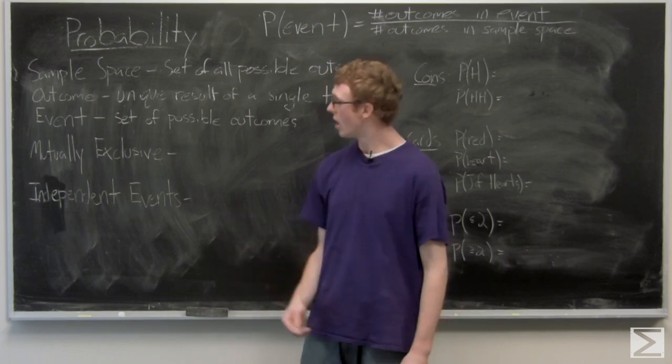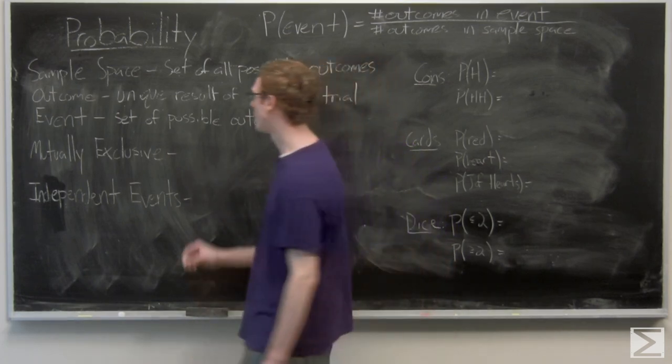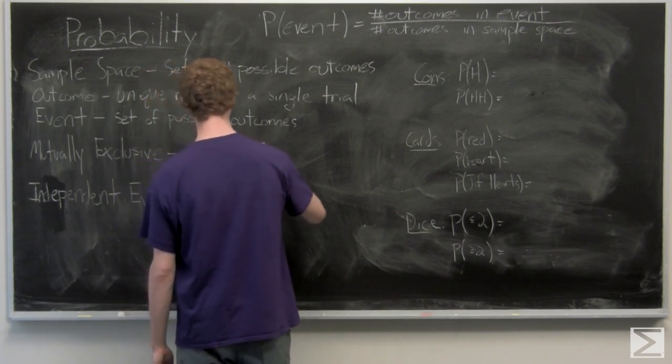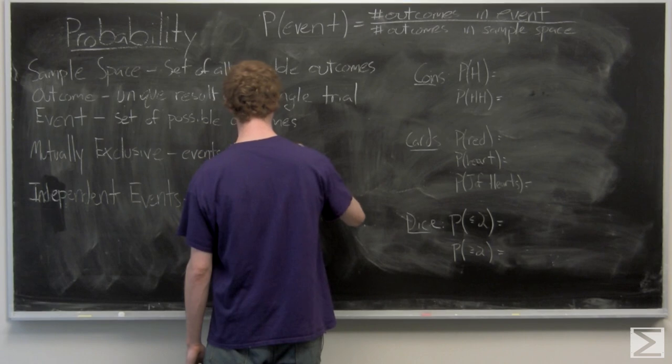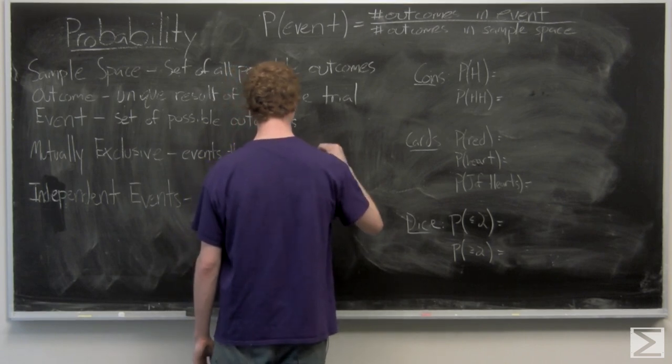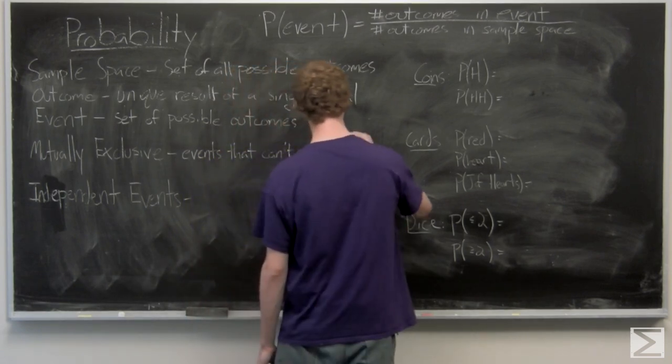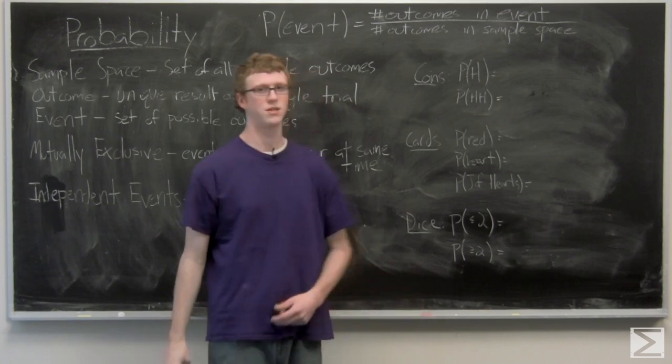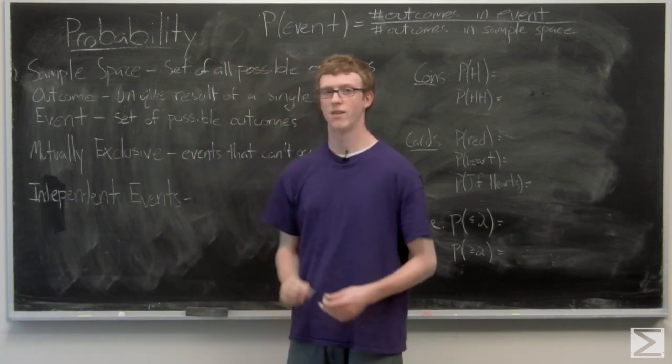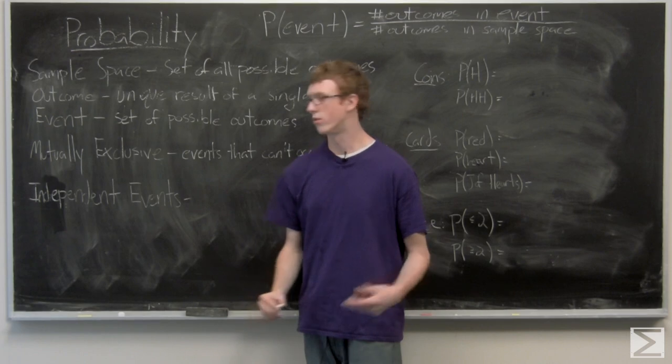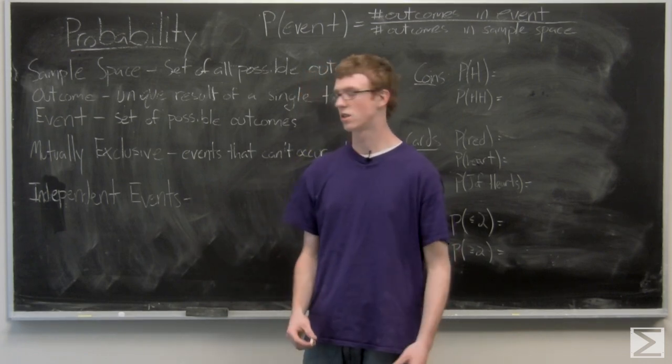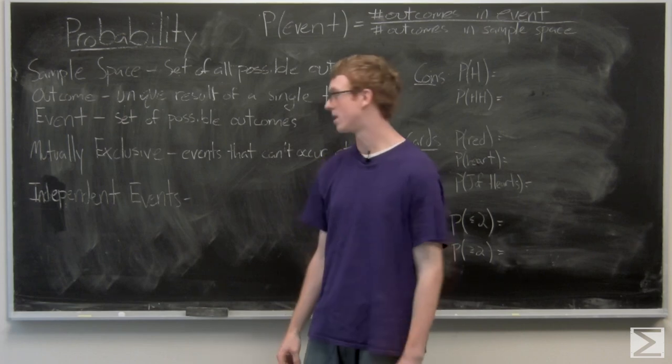Mutually exclusive events are events that can occur at the same time. So again, just sticking with the dice roll, on a single dice roll, the roll of a one, the roll of a two, the roll of a three, etc. Those are all mutually exclusive events because they can't all happen at the same time.